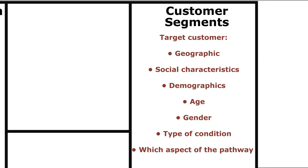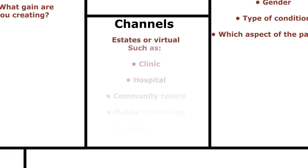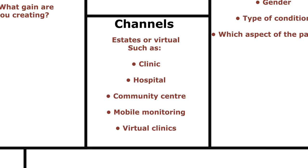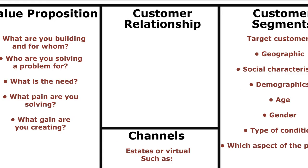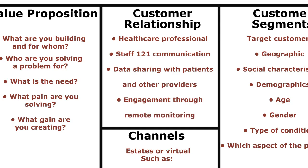Channels: how do you get your product to your customers? Here we think about distribution channels — a physical channel such as a clinic, hospital or community centre, or perhaps virtual channels like mobile monitoring, virtual clinics, and online platforms. Customer relationships is the fourth piece, and has a direct correlation to your value proposition, customer segmentation, and channels. It asks how you get customers through various channels — how will you keep patients engaged in managing their care? Is it by one-to-one staff communication, data sharing with patients and providers, or engagement through remote monitoring or virtual platforms?